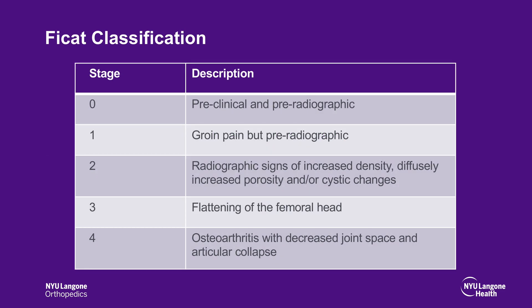AVN typically follows a progressive course. There are multiple classification systems for avascular necrosis of the hip, including the Steinberg classification, the Japanese Orthopedic Association classification, and the ARCO classification. However, the FICAT classification continues to be the most commonly used.